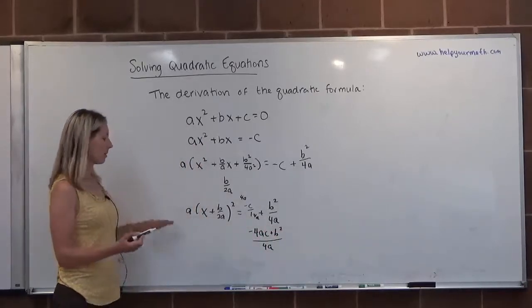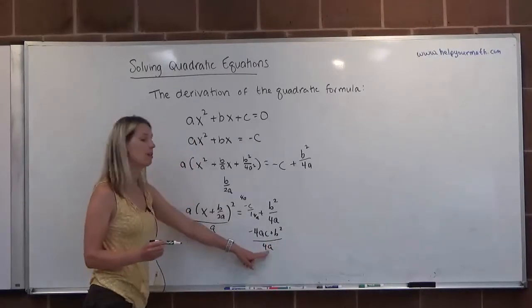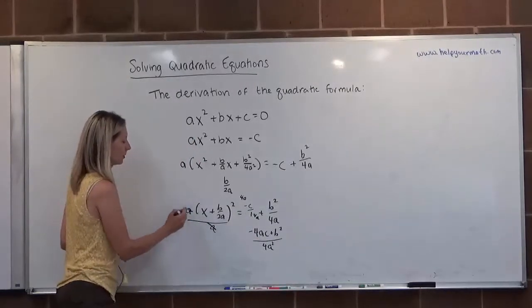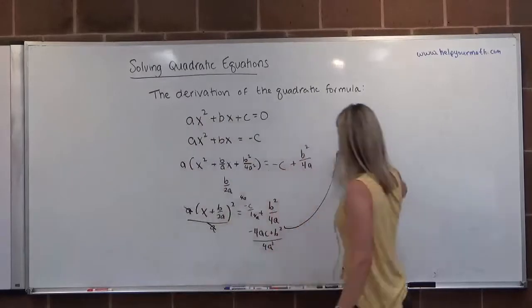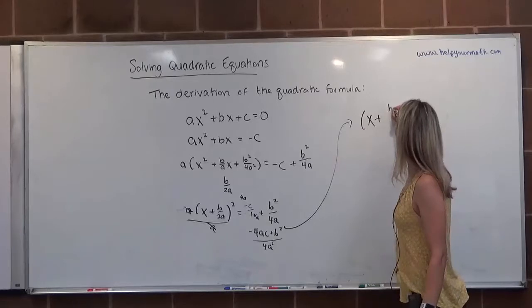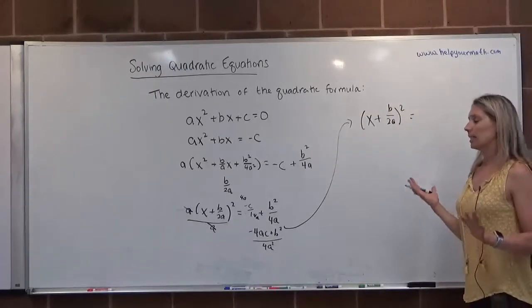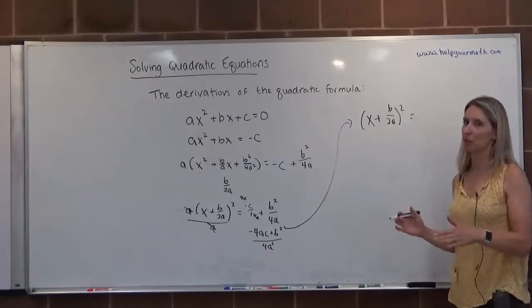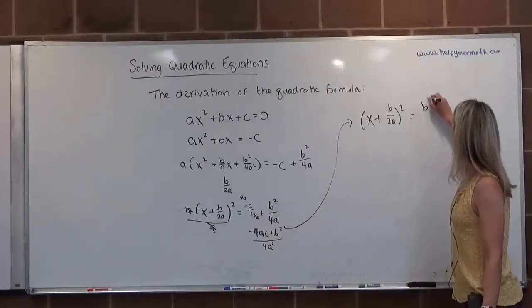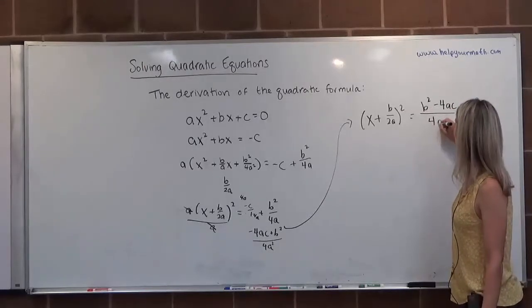Now I'm going to divide both sides by a. When I divide both sides by a, what that's going to do is add another factor of a to the denominator, so I'm just going to make this a squared. This will cancel with this. We're getting there. We have x plus b over 2a squared equals, now, just for the sake of the fact that this is what the formula looks like, I'm going to flip-flop those two and make it b squared minus 4 times a times c, all divided by 4a squared.